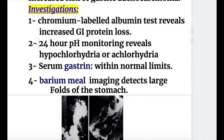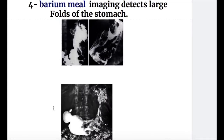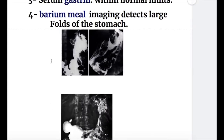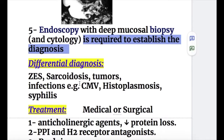Number two, 24-hour pH monitoring reveals hypochlorhydria or achlorhydria. Number three, serum gastrin is within normal limits. Number four, barium meal imaging detects large folds of the stomach. Number five, endoscopy with deep mucosal biopsy and cytology is required to establish the diagnosis.